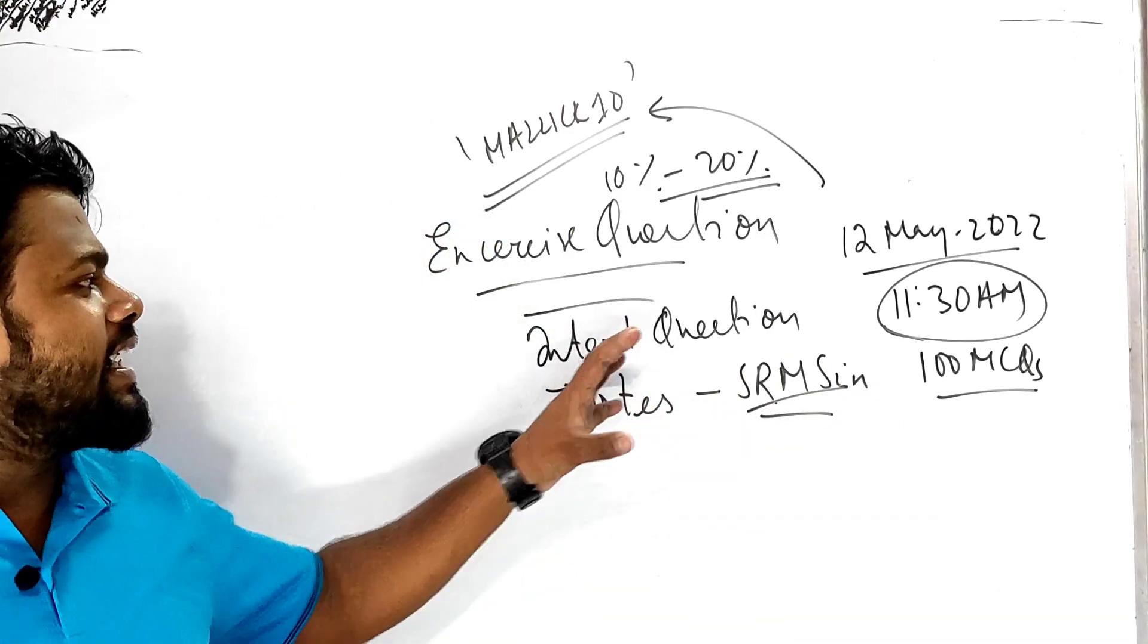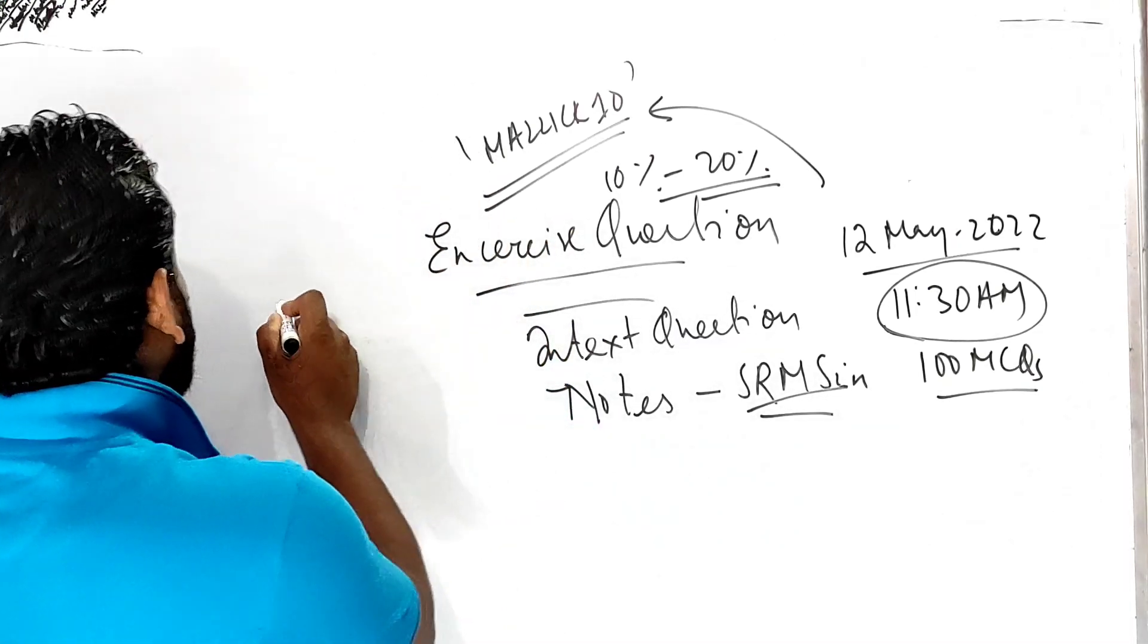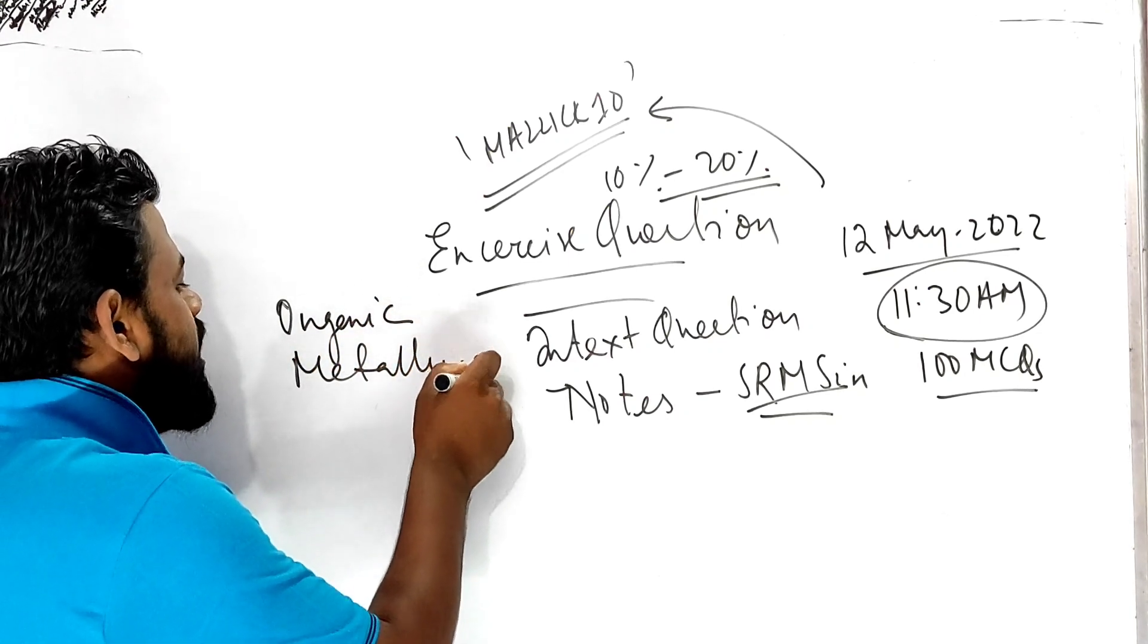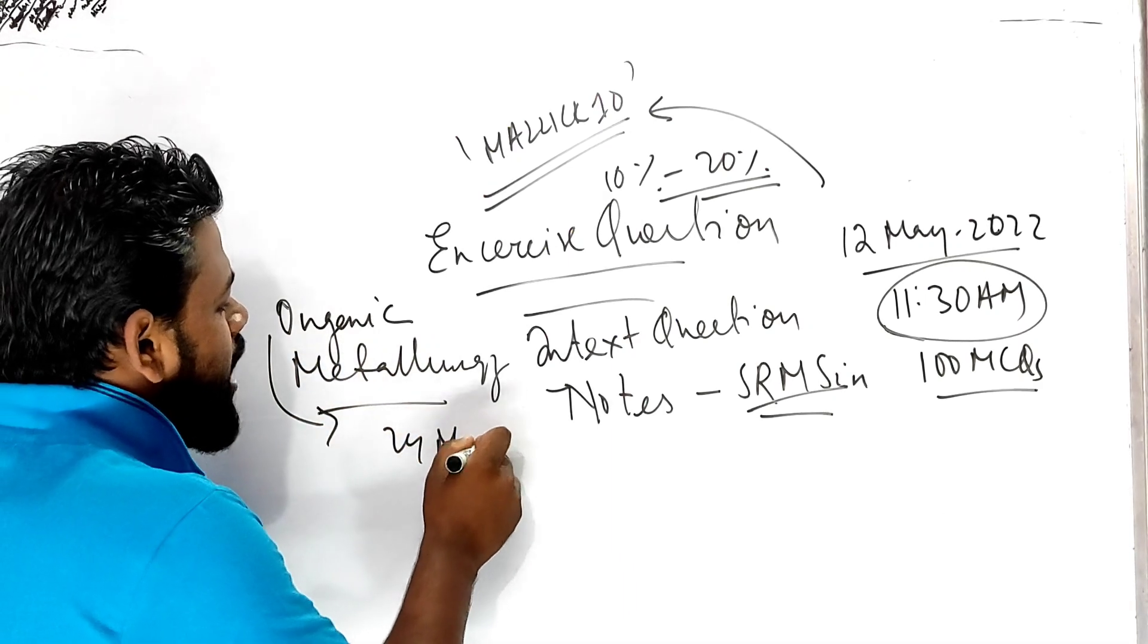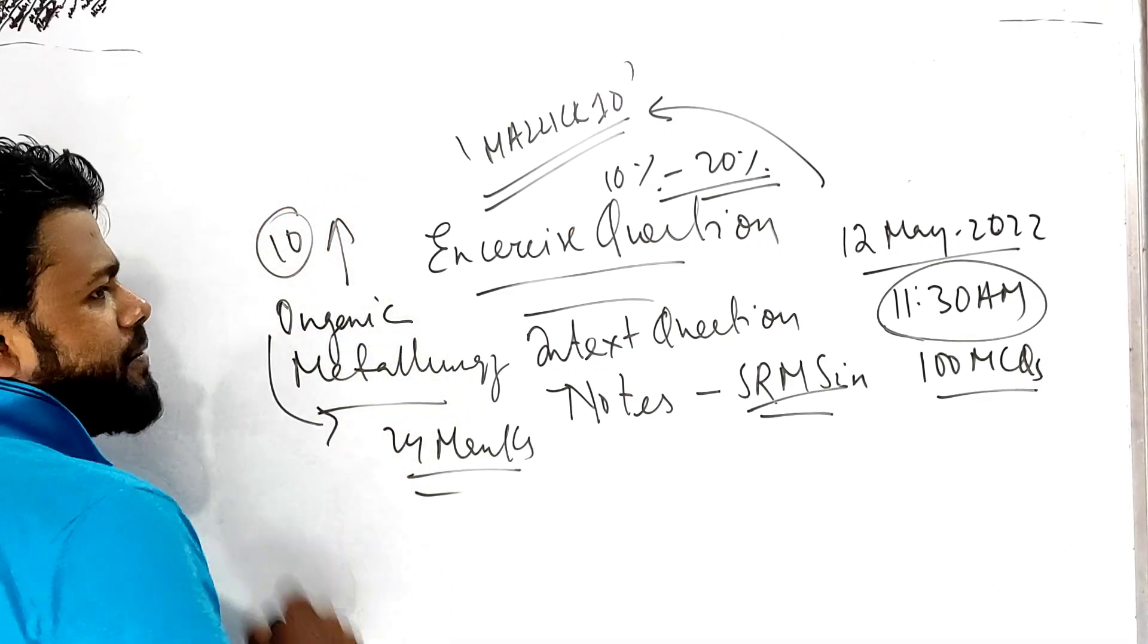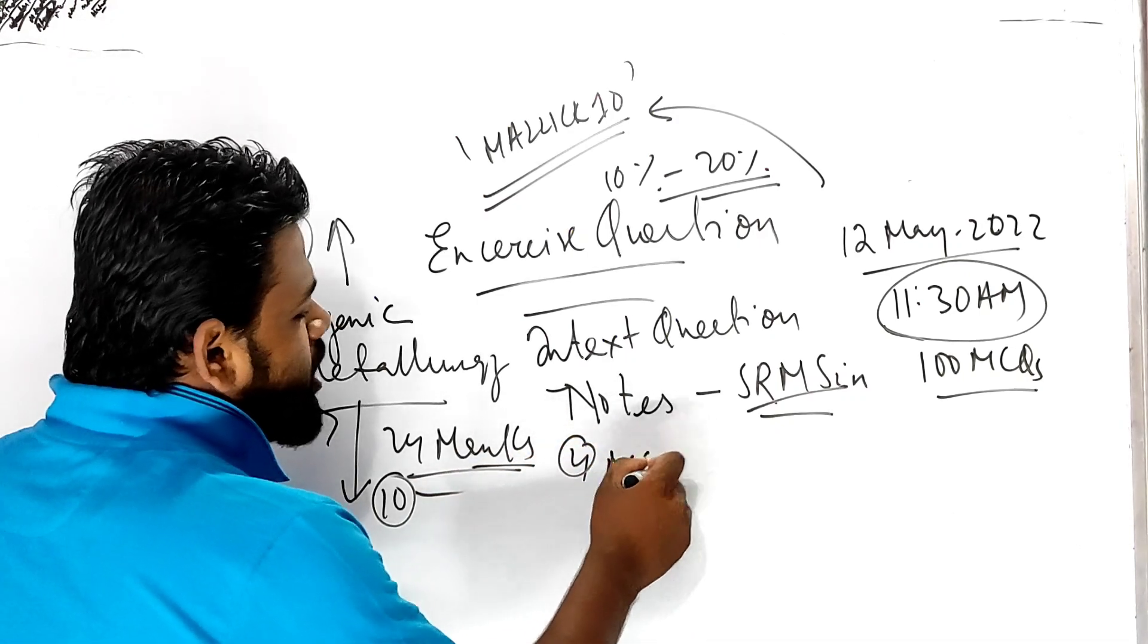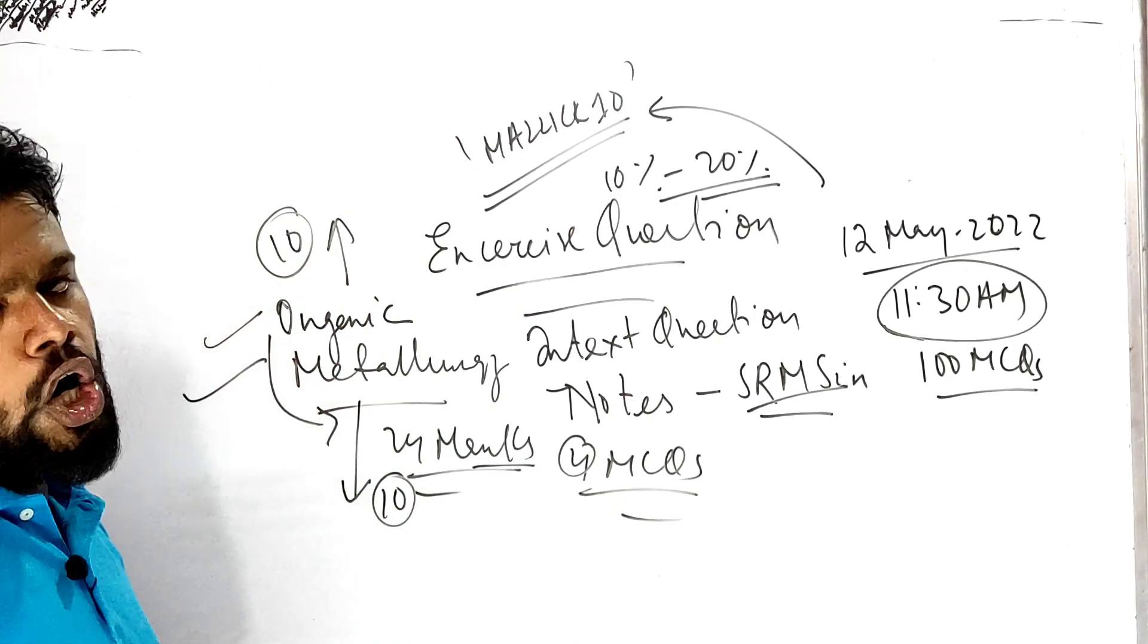Let's start the session. First of all, exercise questions; second and third is notes. Moral of the story: do not ignore organic chemistry, do not ignore metallurgy. If you complete these, 24 marks are reserved. How can I say 24 marks? Because 10 marks will definitely be asked from subjective, 10 marks will definitely be asked from metallurgy, 4 marks will definitely be asked from MCQs.